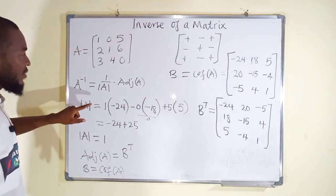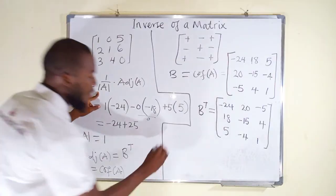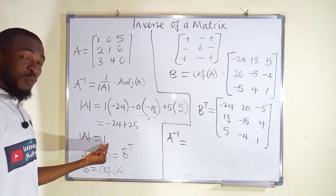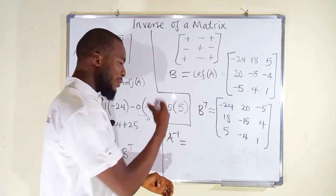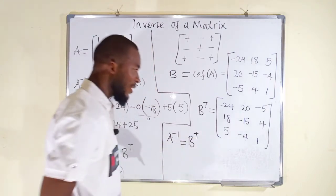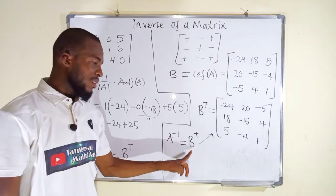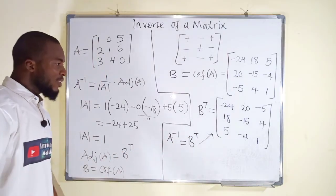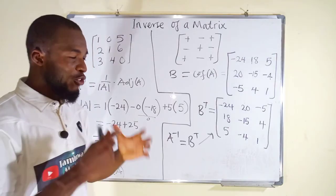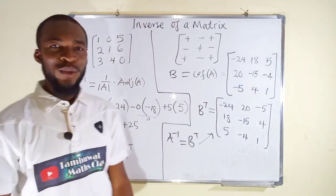Alright. Let's substitute everything into the formula. A inverse equals 1 over the determinant, and our determinant is 1. So 1 over 1 is 1, and multiplying by B transpose will not change it. Therefore, A inverse is the same as B transpose in this case. This is exactly how to find the inverse of a matrix using the traditional way. Subsequently, I'm going to guide you through how to find the inverse of a matrix using shortcuts. This is all I have for you today. Thank you for watching. Do have a nice day.